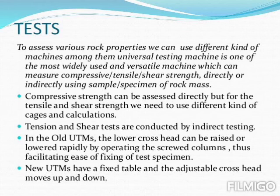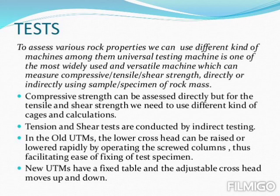To assess various rock properties, we can use different kinds of machines. Among them, the UTM is one of the most widely used and versatile machines, which can measure compressive, tensile, or shear strength directly or indirectly using a particular sample or specimen of rock mass. Compressive strength can be assessed directly, but for tensile and shear strength, we need to use different kinds of cages and calculations.